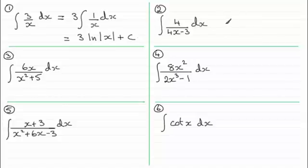OK, looking at this second one, I notice that when I differentiate the denominator here, I'm just going to get four and that's in the numerator. So this is a very straightforward one. It's just going to be the natural log then of the modulus of that denominator, 4x minus 3, and then we've got the constant of integration c.